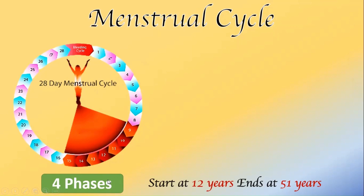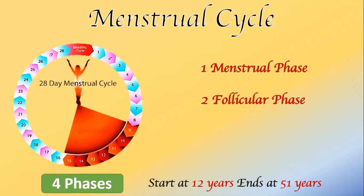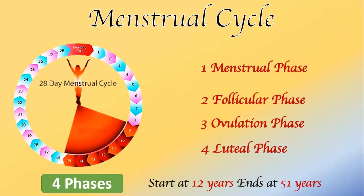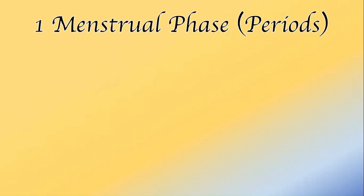The menstrual cycle is easily understood in four different phases. The first step is the menstrual phase, the second is the follicular phase, the third is the ovulation phase, and the final phase is the luteal phase.